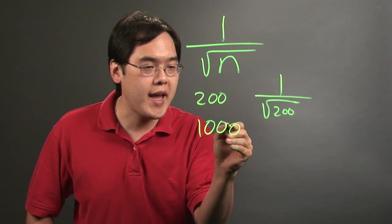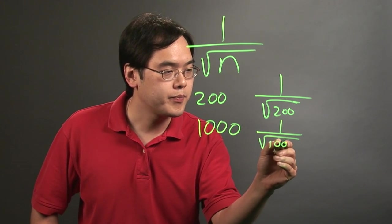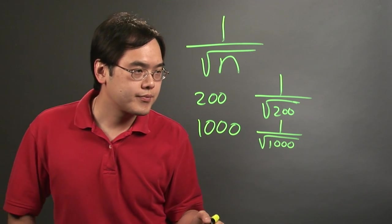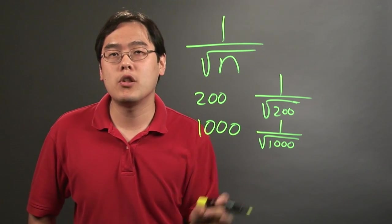If you were to interview let's just say a thousand people, you'll be 1 over the square root of a thousand. Now the larger the denominator, the smaller the number itself.